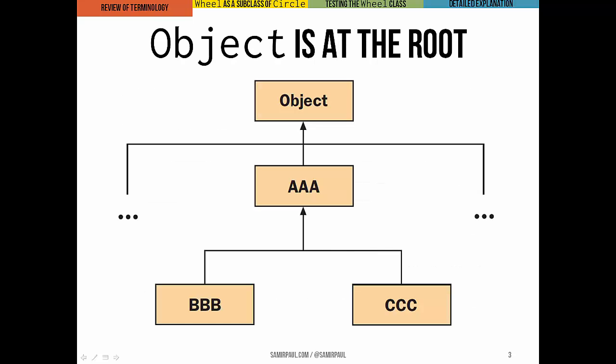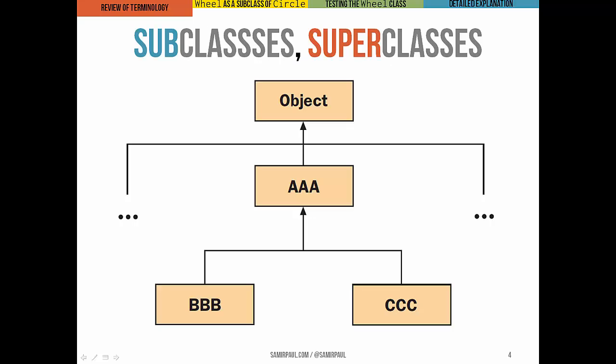A picture may make this easier to understand. In this figure we can see a part of a class hierarchy that has Object at the root, and by the root we mean it's at the top position in this sort of upside down tree. Below Object we can see its subclasses, AAA, BBB, and CCC.